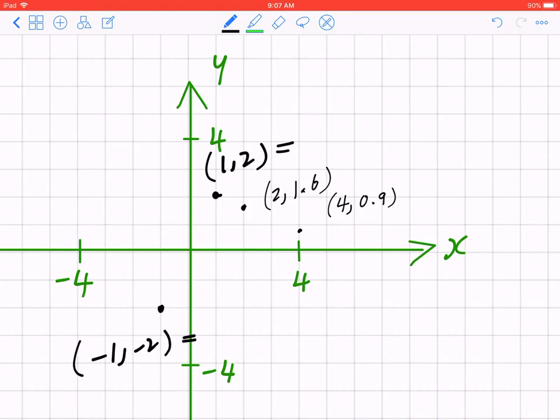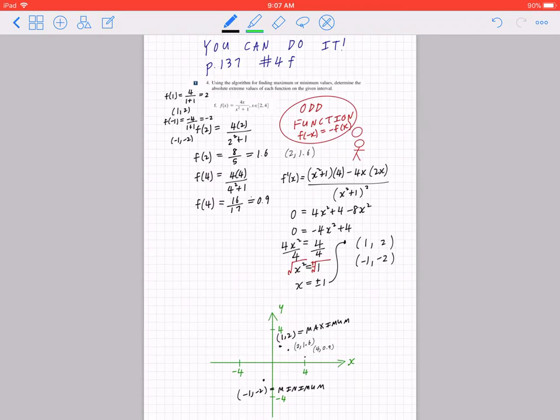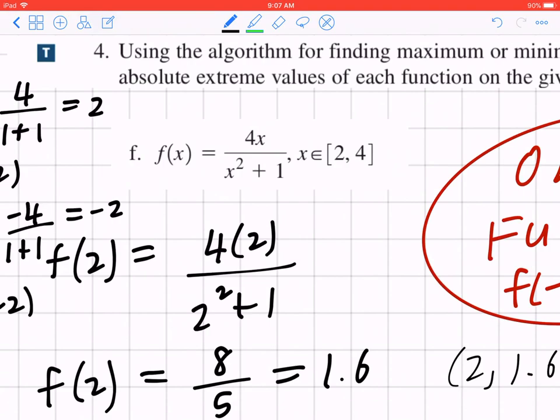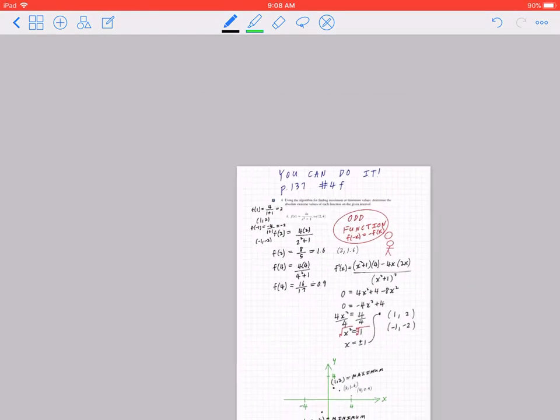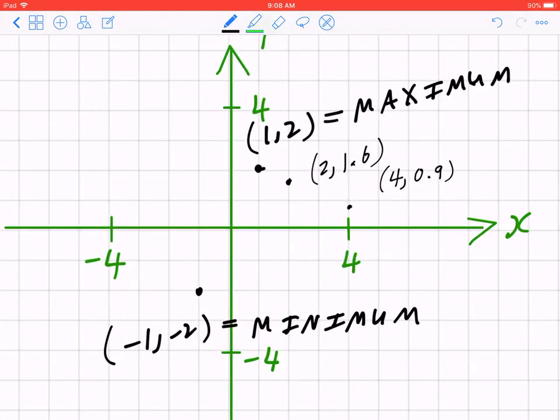Now by inspection, you can tell 1, 2 is the largest y-value possible, which means this is going to be a maximum. Likewise, negative 1, negative 2 is the smallest y-value possible, which means this is going to be a minimum. We go back to the basics: the function is odd, which means it's symmetric about the origin. If you look at the x, y intercepts, you can also tell that the x-intercept is going to be at 0, 0.